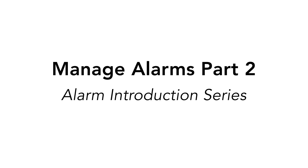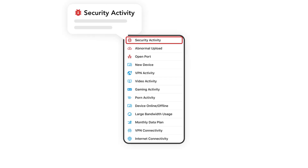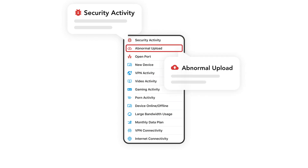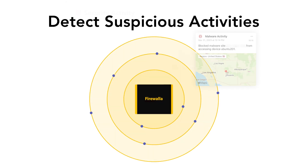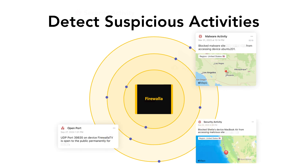Welcome to part two of our alarm introduction series. In this segment, we'll be focusing on how to effectively manage security alarms and respond to abnormal upload alarms, ensuring your system stays secure and alert. One of the most important functions of Firewalla is to detect suspicious activities, such as malware downloads, phishing, and open ports.